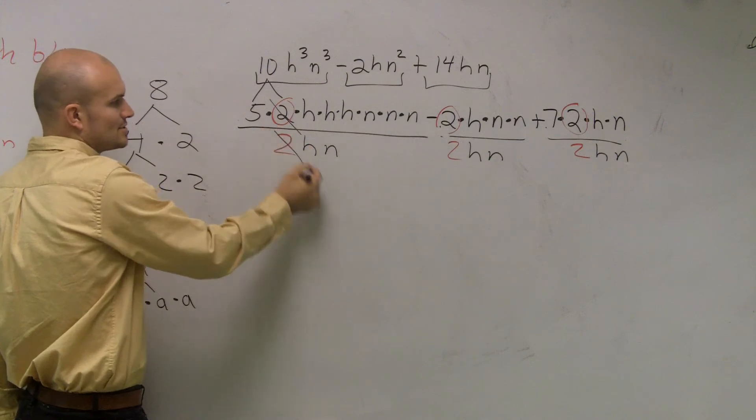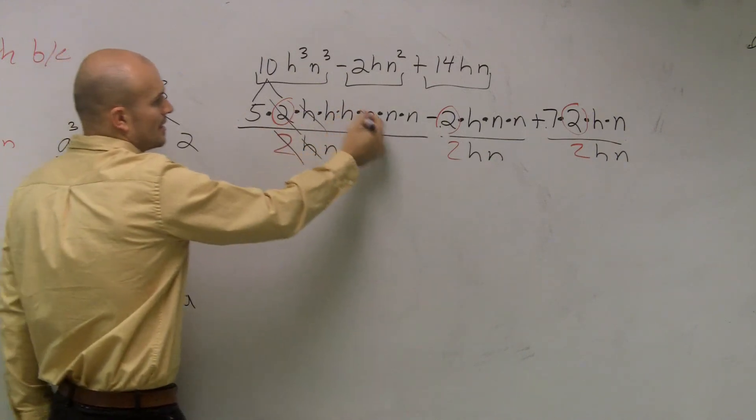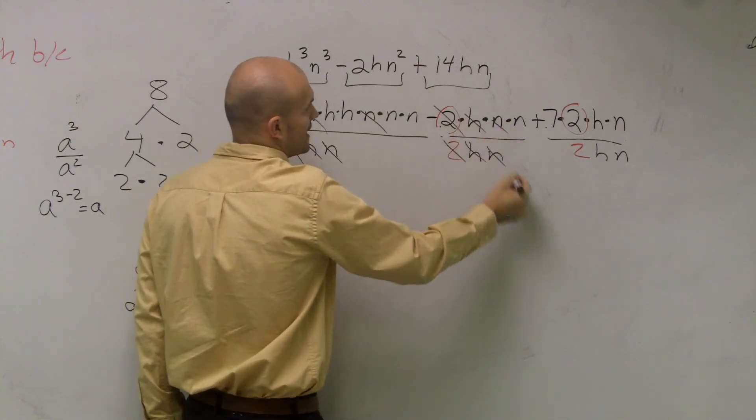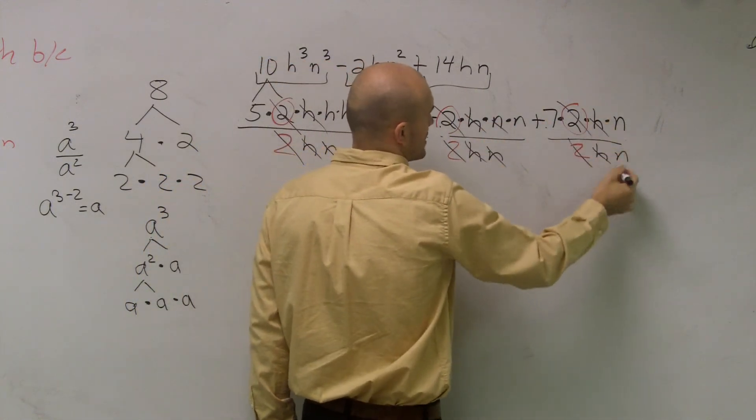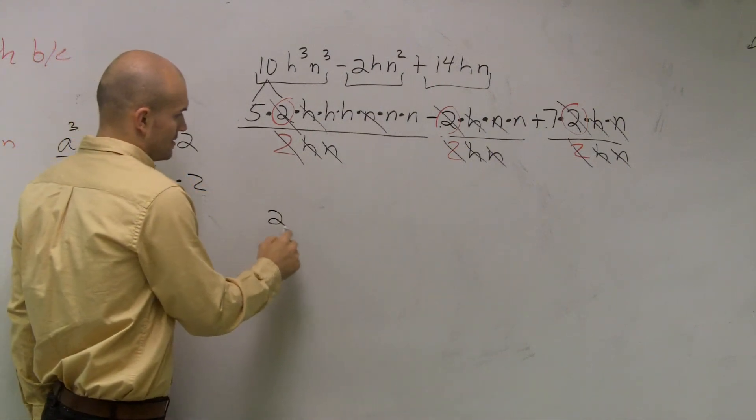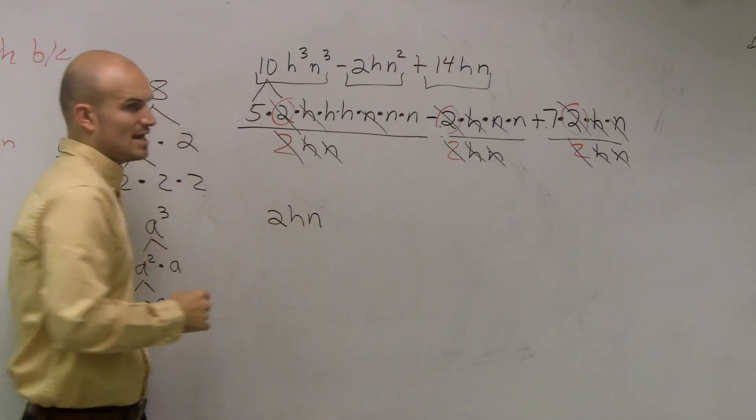So what I'm doing is I'm actually dividing each one of my terms by my greatest common factor. So like it's 2 divided by 2, h divided by h, n divided by n. So what I did is when I divide by one number, I divide it out at 2hn.